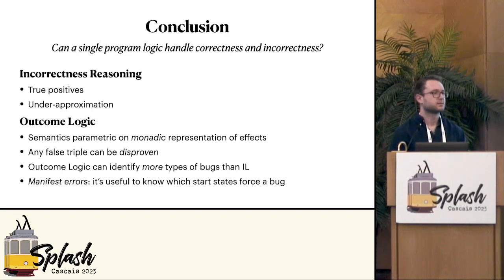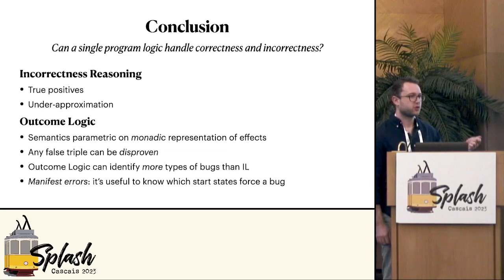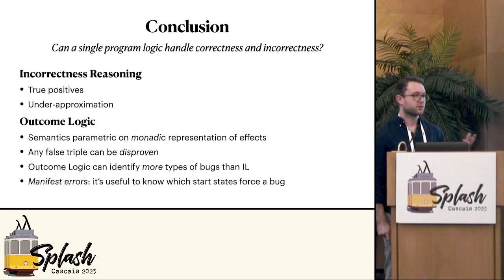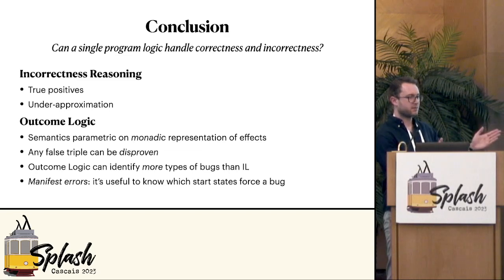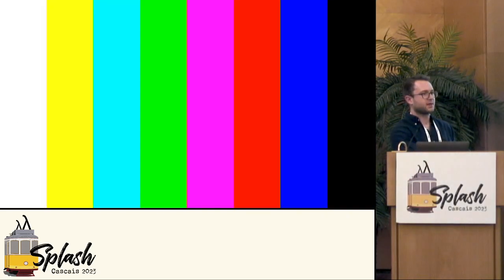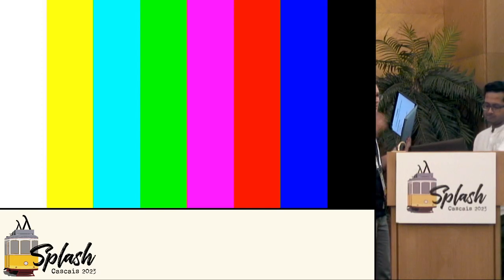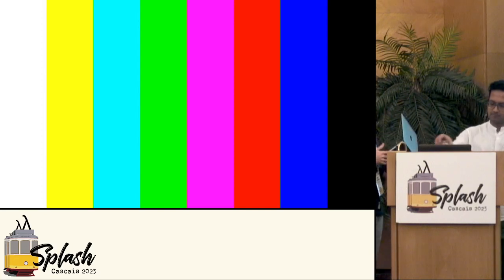Question: At the beginning when you gave the semantics of the outcome conjunction you used union — if you change that to disjoint union what would be the effect? Answer: At first glance disjoint union may seem like what you want, but it doesn't work well in terms of program semantics. You can imagine branching into two non-deterministic paths where both paths end up in the same end state — if you use disjoint union you can't encode the semantics of that program.